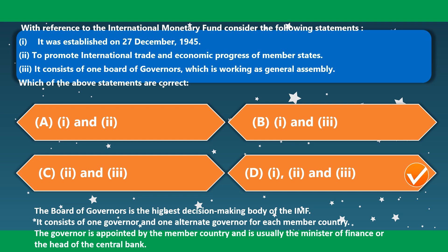With reference to the International Monetary Fund, consider the following statements. It was established on 27 December 1945 — correct. To promote international trade and economic progress of member states — correct. It consists of one Board of Governors working as a General Assembly — not correct. So the correct option is option D. The Board of Governors is the highest decision-making body of the IMF, consisting of one Governor and one alternate Governor for each member country.